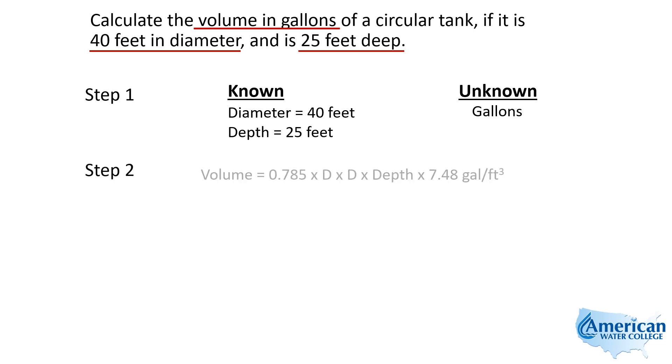In our second step of our problem-solving approach, we write down our formula. The formula for calculating the volume of a circular tank is volume equals 0.785 times the diameter times the diameter times the depth times 7.48 gallons per cubic foot.